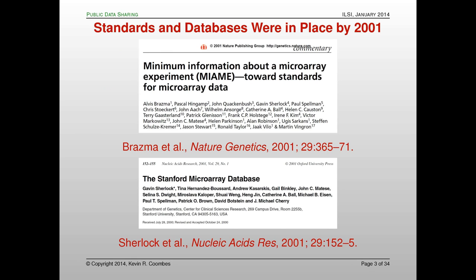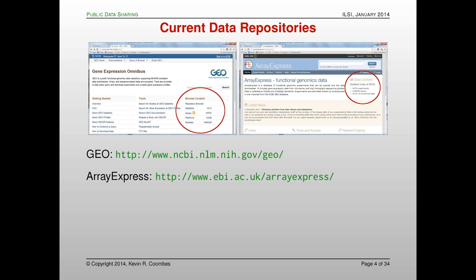By 2001 there were standards in place for how you would describe a microarray experiment — MIAME, the minimum information about a microarray experiment — and databases like the one at Stanford to make microarray data available to researchers around the world. The two major data repositories right now, GEO at the National Cancer Institute and ArrayExpress at the European Bioinformatics Institute, both contain more than 44,000 data sets and more than a million individual sample assay data. So there's a lot of public data out there looking at gene expression in cancer and elsewhere.